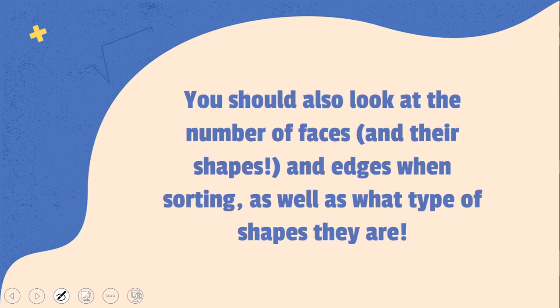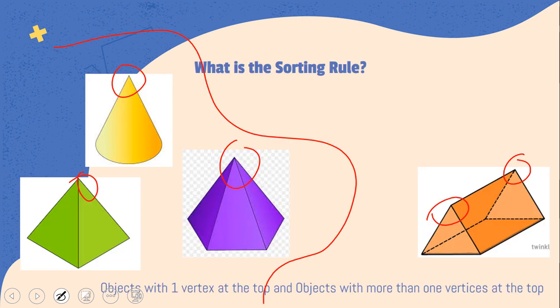But, you should also look at things like number of faces, or the shape of those faces. So, here we have a circle face, this is a square, this is a, it could be a pentagon or a hexagon, and obviously this is a rectangle.